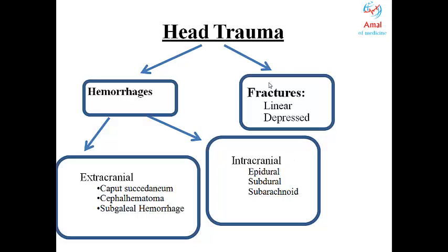Head trauma during birth is subcategorized into two categories: hemorrhages or fractures. Fractures are of two kinds: linear fractures and depressed fractures. Fractures are somehow related to hemorrhages, so the type of fracture more common in specific hemorrhages will be discussed as we proceed.